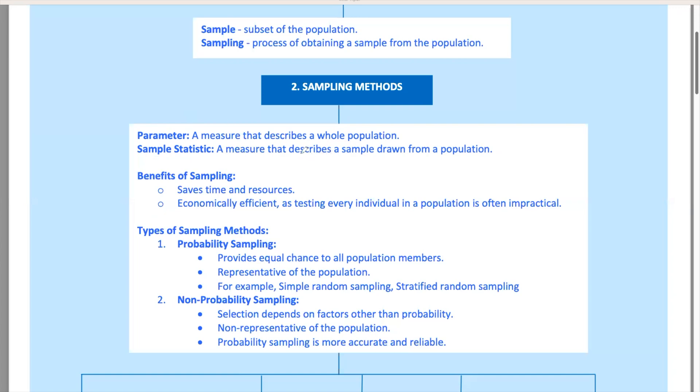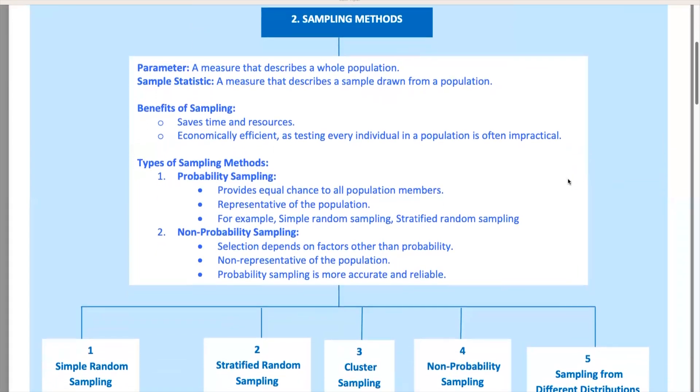So, why do we sample? Picture trying to survey every single person in a large city about their commuting habits. It would take forever and cost a fortune. Instead, we take a representative sample, ask them about their commutes, and use that data to infer the habits of the entire population. Sampling saves us time, energy, and money. Examining every member of a population is usually impractical, if not impossible. Instead, we gather data from a smaller group and make educated guesses about the larger population.